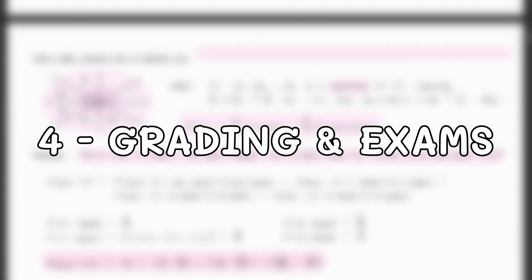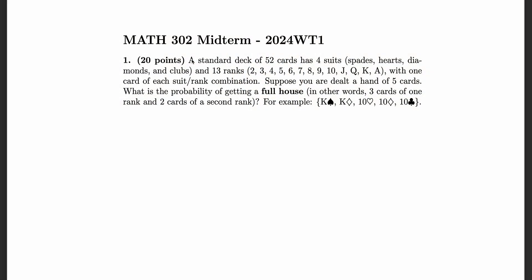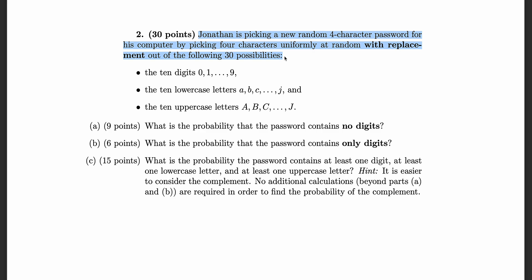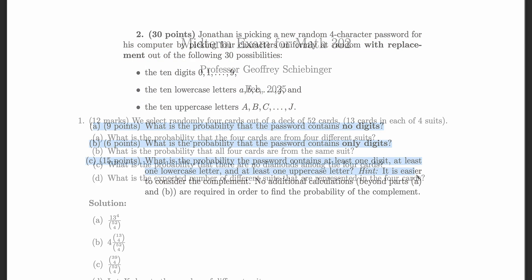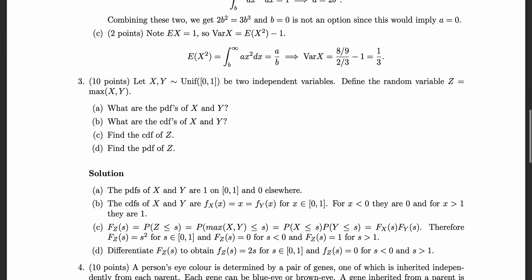In terms of the grading schemes and the exams for Math 302, here's the breakdown: for my section, homework assignments were weighted at 10%, the midterm exam was worth 40%, and the final exam was worth 50%. This grading scheme will differ depending on your professor, as the people who took Math 302 the semester before me had two midterm exams and completion homework, whereas I had one midterm and marked homework. Generally speaking, exams will have a number of questions with multiple parts — our midterm had 4 problems and our final had 8 problems.